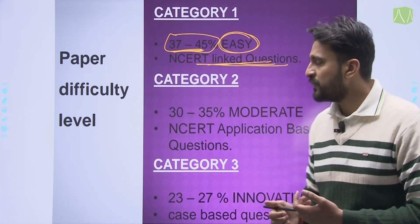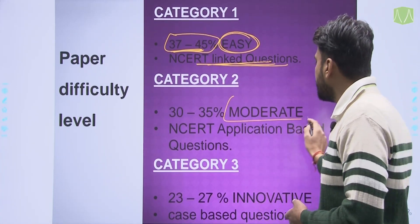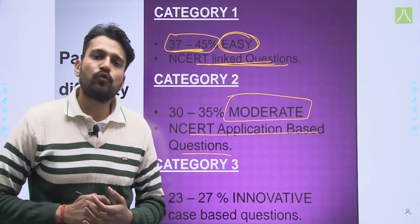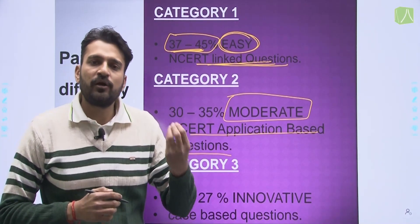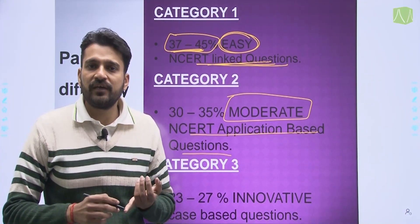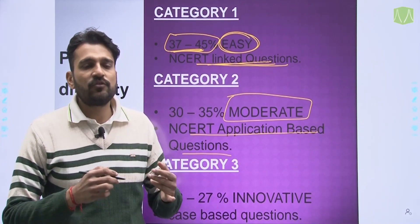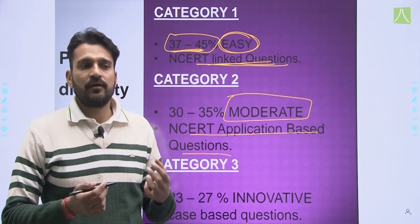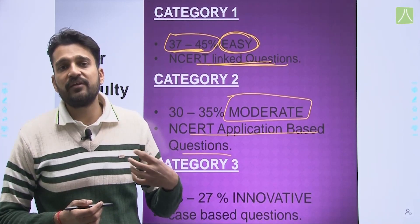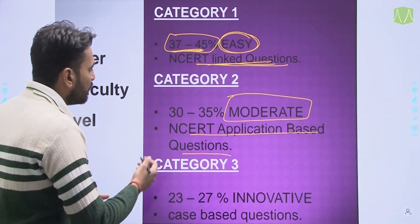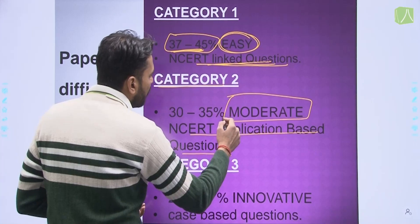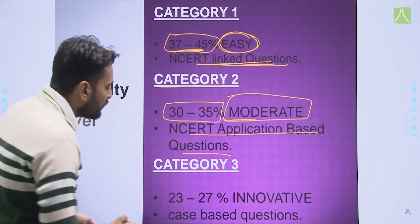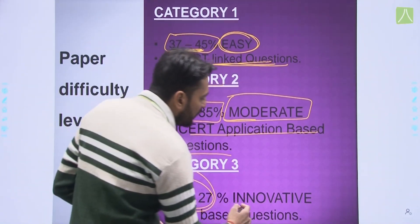The second category will be moderate type questions, nearly 32–35% weightage. Application-based questions from the topics will be asked, similar to what was asked in Term 1. The third category, at 23–27%, will be innovative type questions.